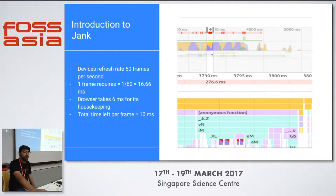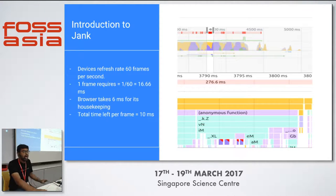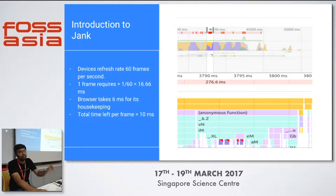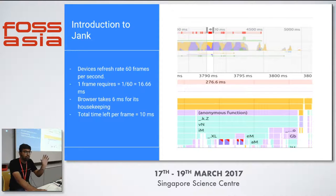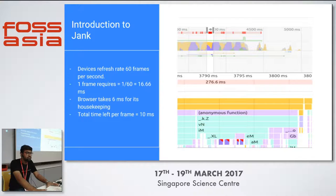Our focus, if we want to make our website faster, is to remove those red marks on the purple shadows. Every device has a refresh rate of 60 frames per second, meaning one frame only has 1/60 of a second. On a mobile device, the website is divided into frames, and for each frame you only get 1/60 of the time — which comes to 16.66 milliseconds. The browser itself also needs 6 milliseconds to load, so the final time available to load each frame is only 10 milliseconds.